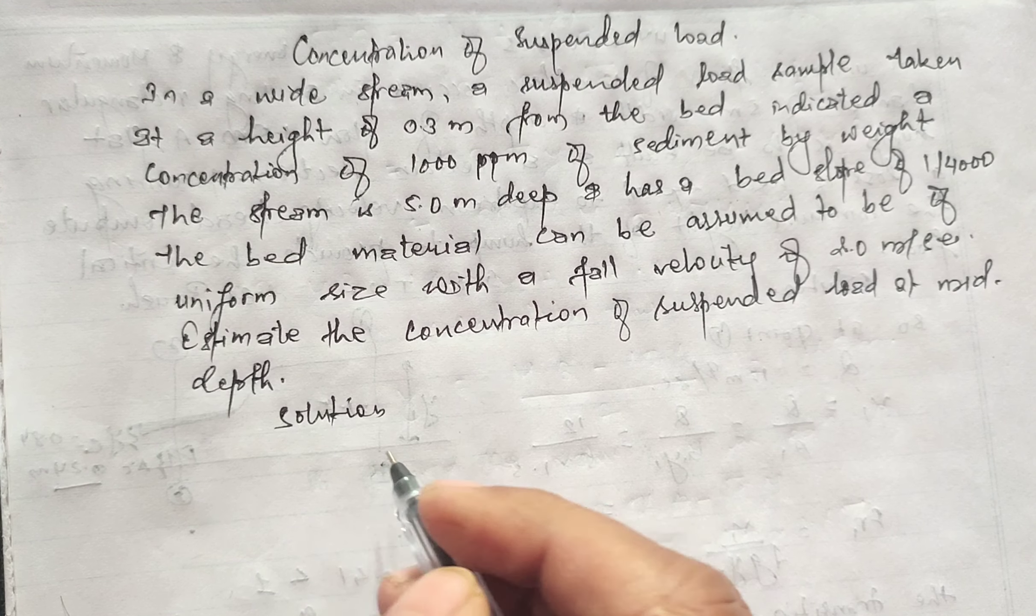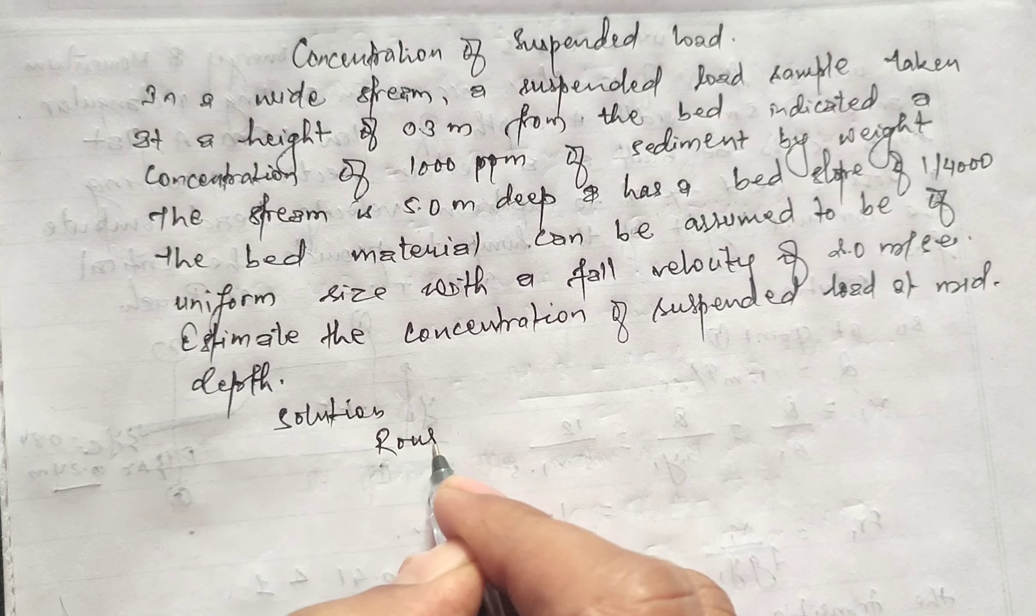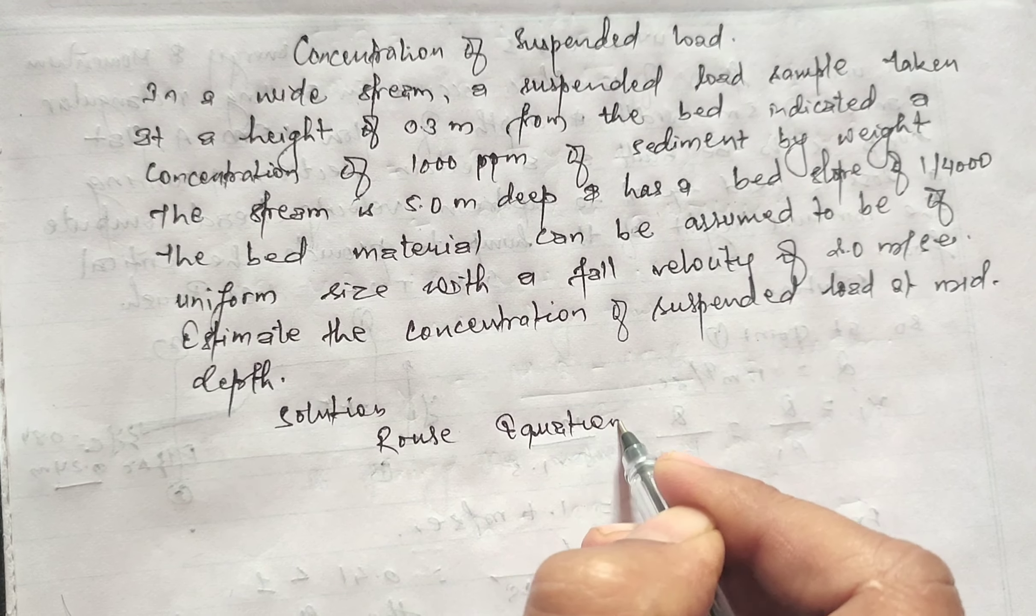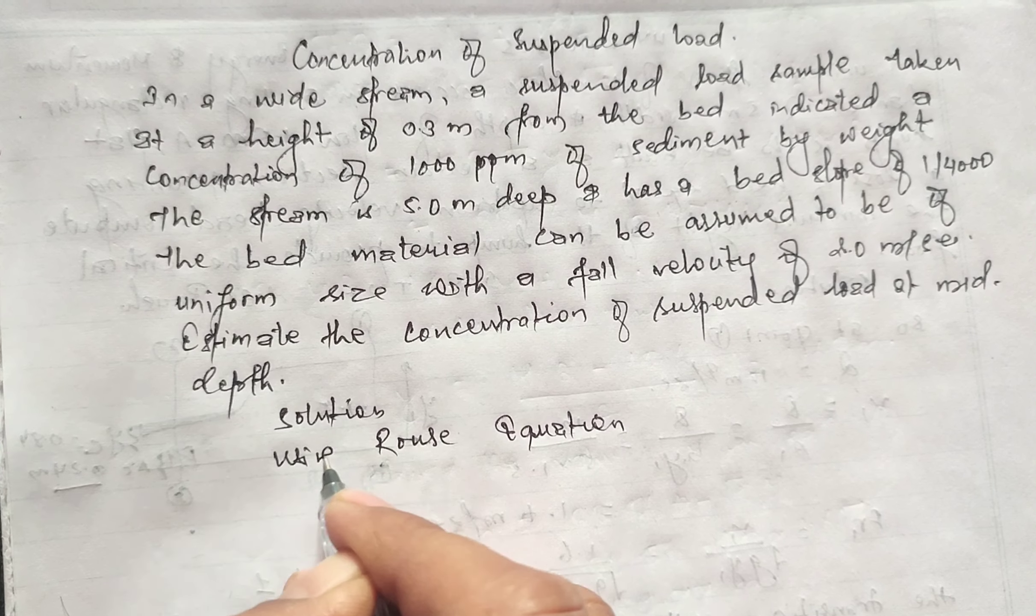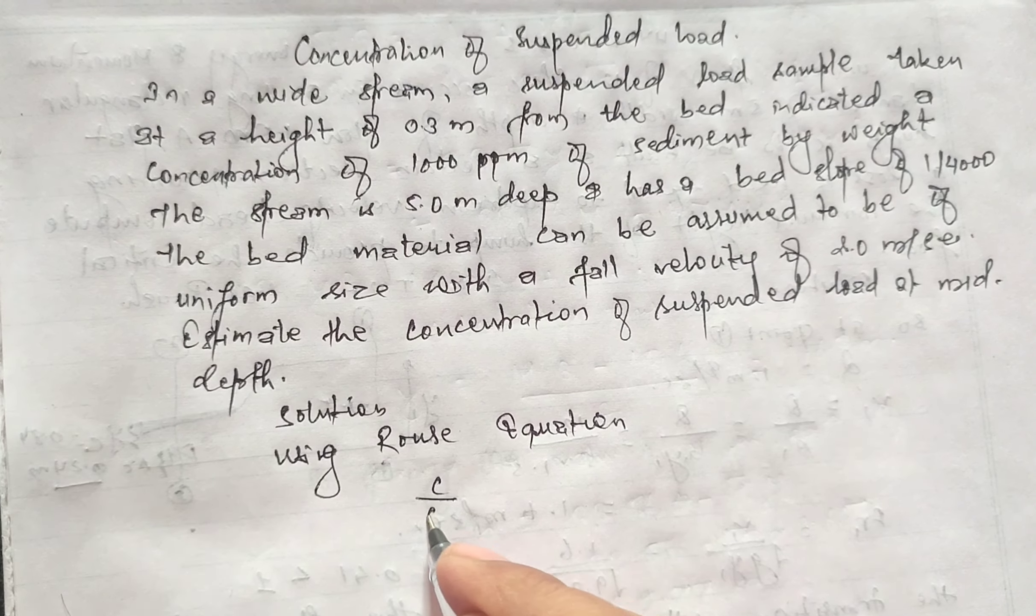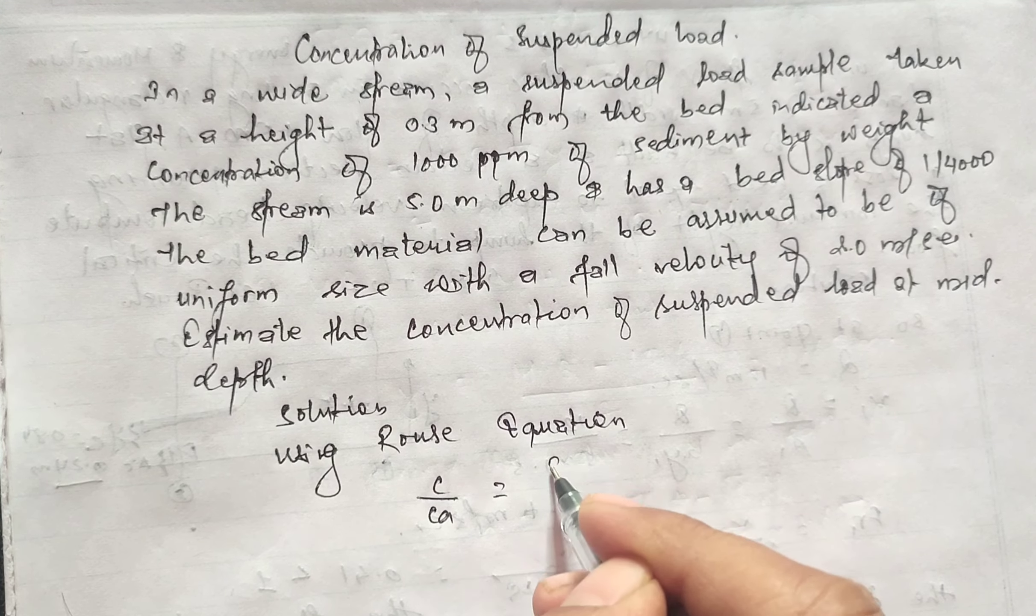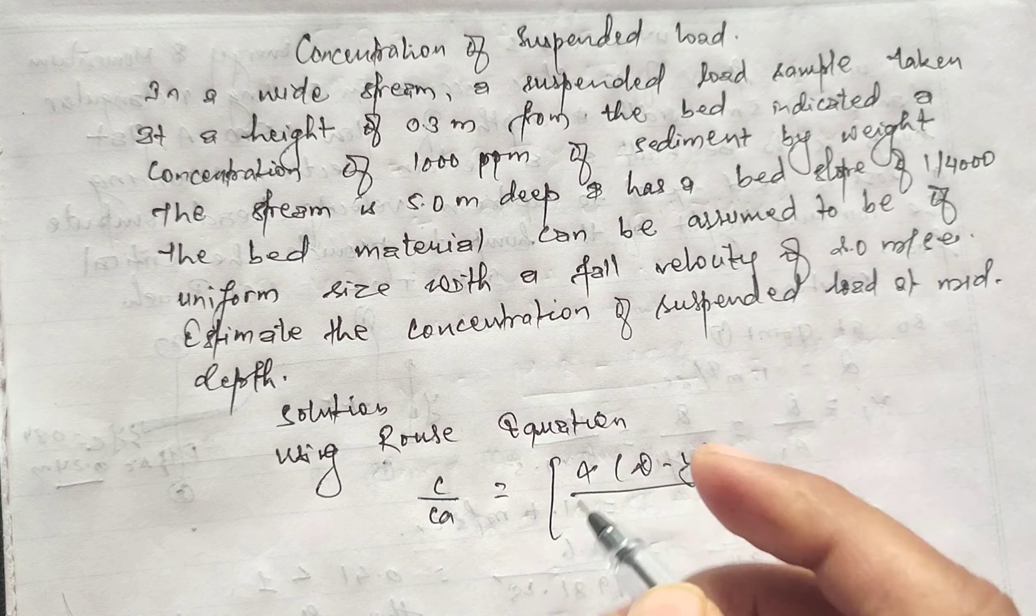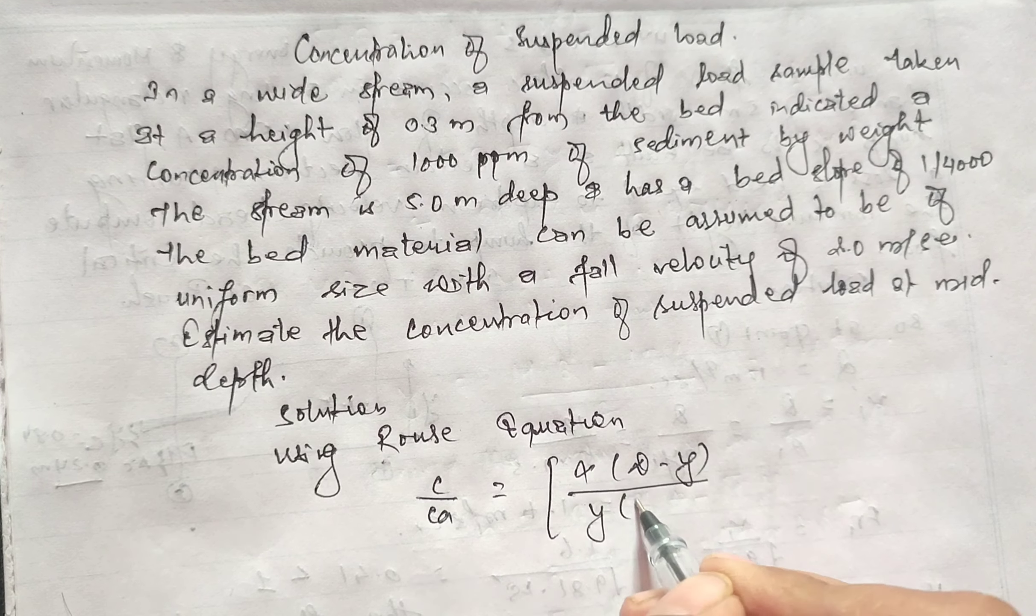We'll solve this using the Rouse equation. That is: c/c_α equals [α(d-y)/(y(d-α))]^z, where z equals ω₀/(κv*).